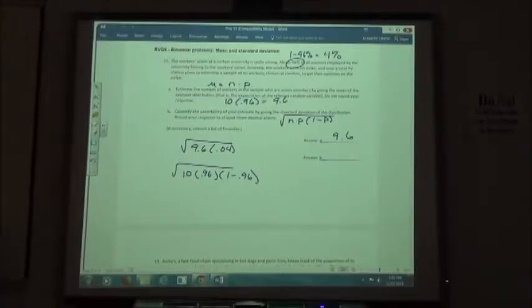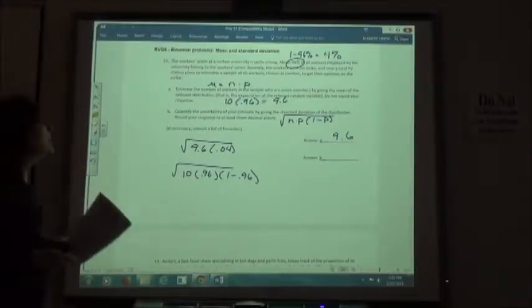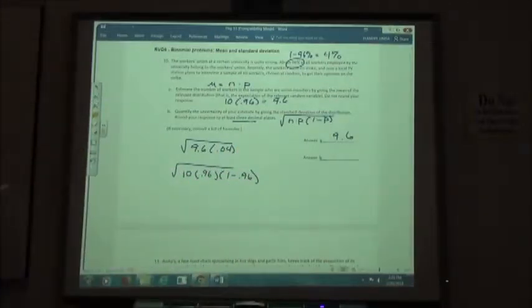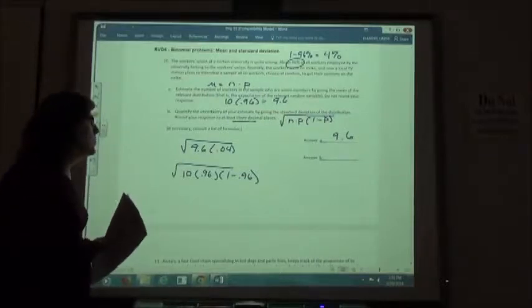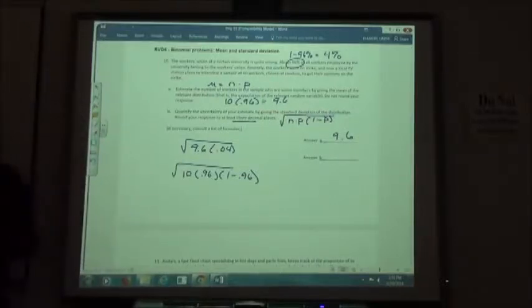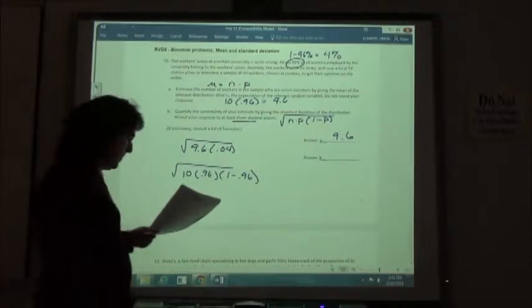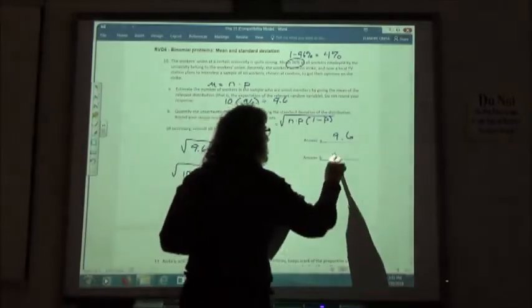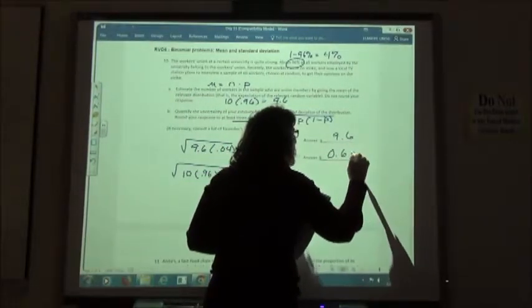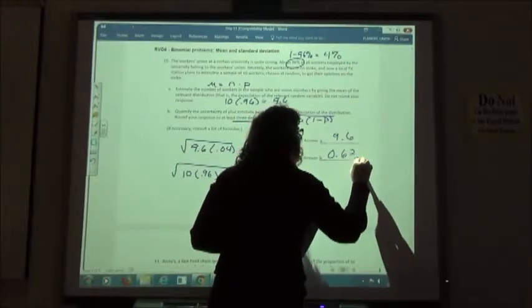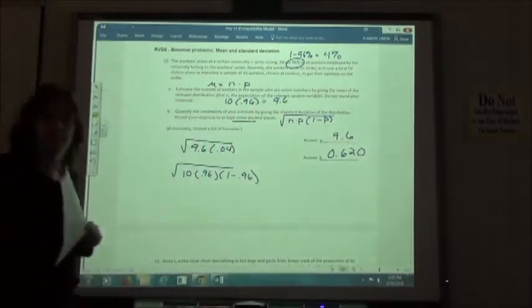And you come up with what, three decimal places it says? Three decimal places? .620. That's what I got, .620.